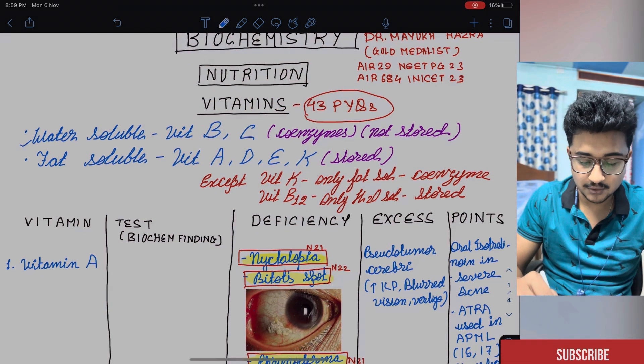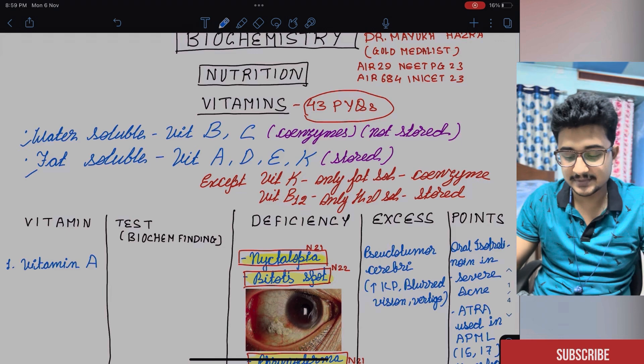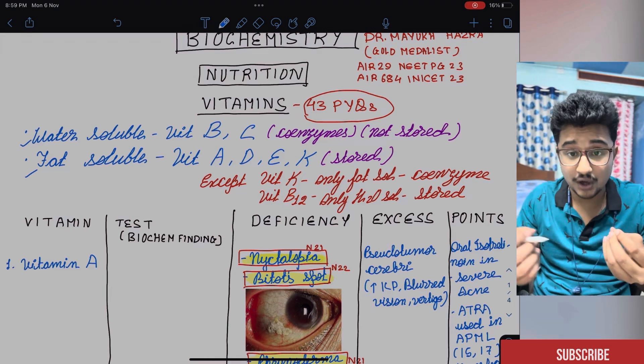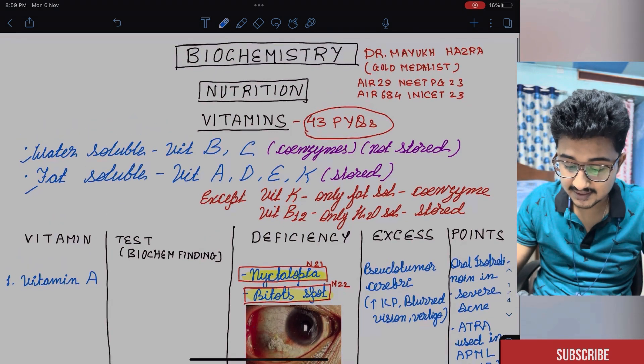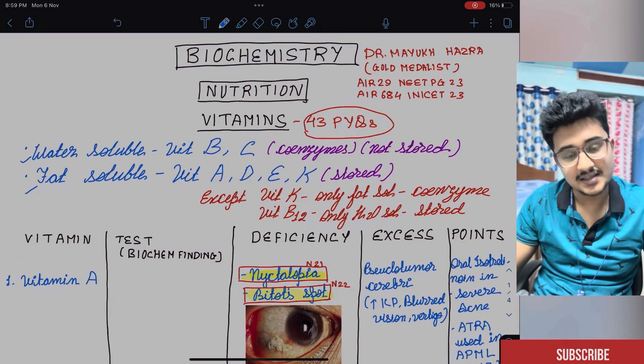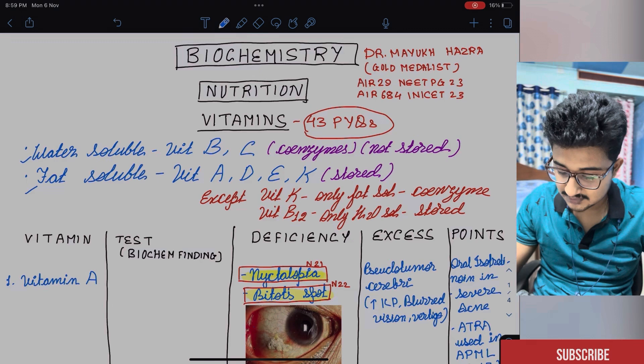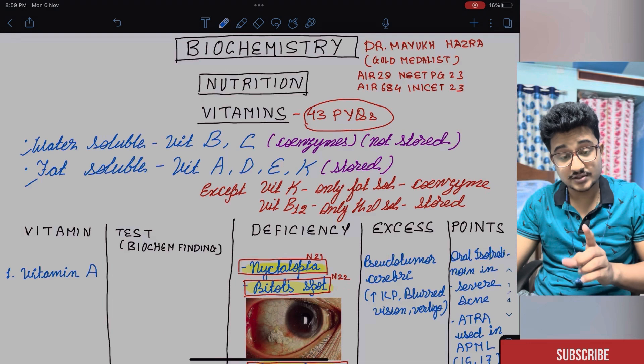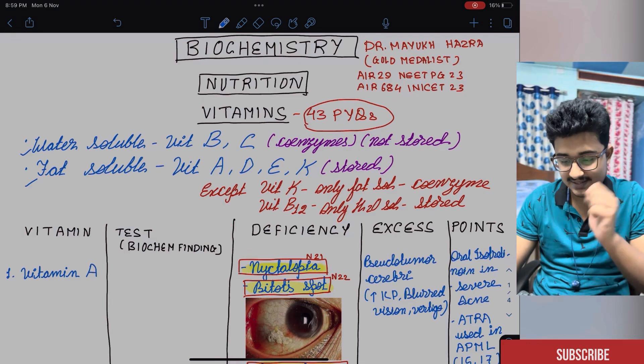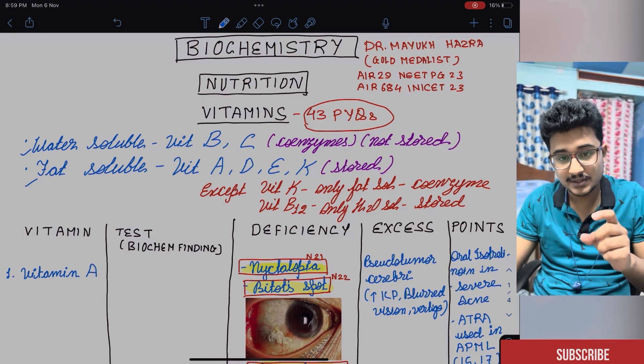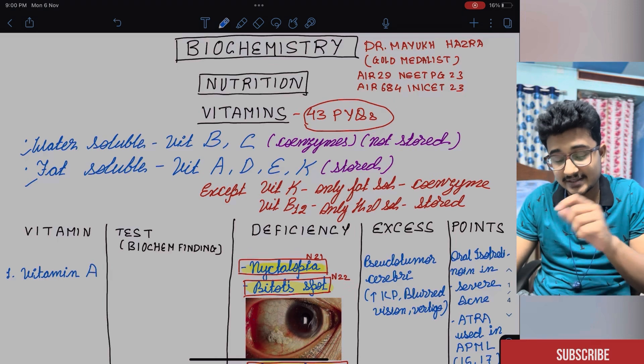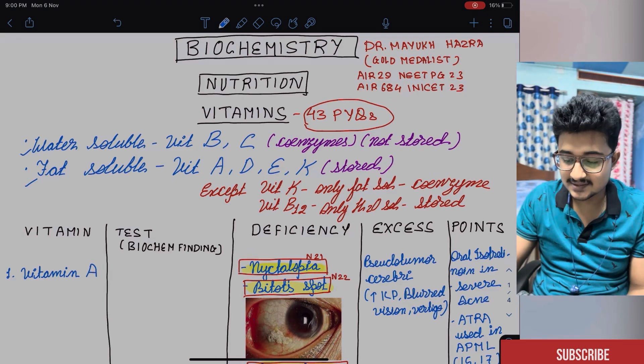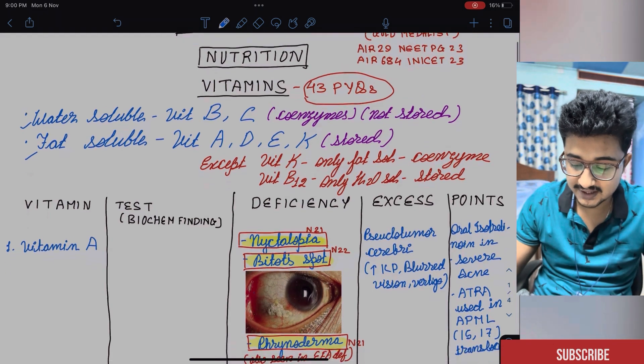There are two kinds of vitamins: the water soluble and fat soluble vitamins. As you know, B complex and C are the water soluble vitamins and ADEK is the fat soluble vitamin. They are stored except vitamin K which is the only fat soluble vitamin that acts as a coenzyme. And vitamin B12 is the only water soluble vitamin that is stored. You can see that those who consume many vitamin pills they have hypervitaminosis of vitamin B12.